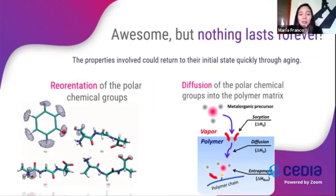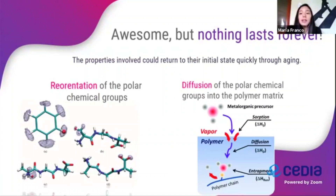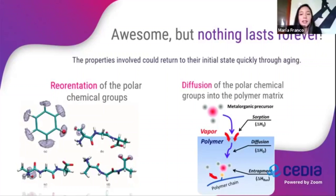Nothing lasts forever. According to the reviewed scientific articles, plasma treatments on polymers mainly improve the wettability of their surfaces. However, the properties involved could return to the initial state quickly through aging. This can be attributed to the reorientation of polar chemical groups in the material. Another reason for aging is that polar groups diffuse into the polymer matrix, generating degradation of the surface through rapid interaction of the polymer with radicals or ions.